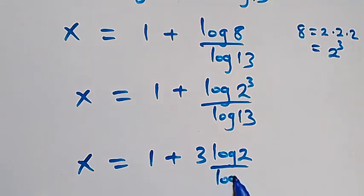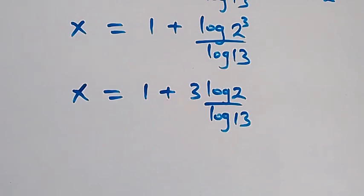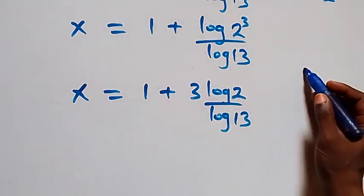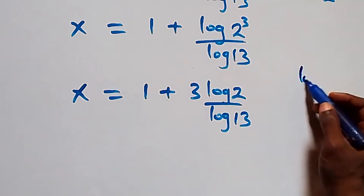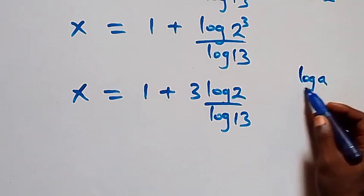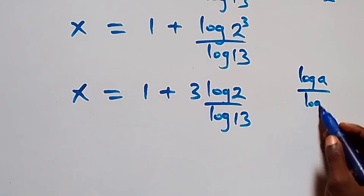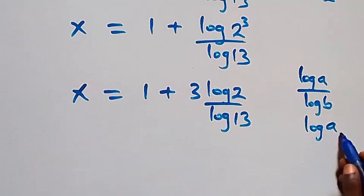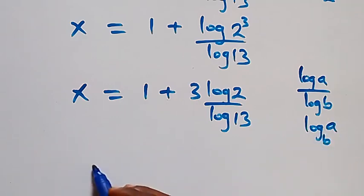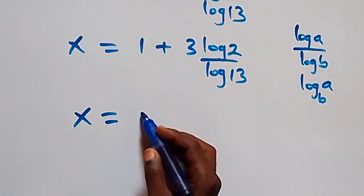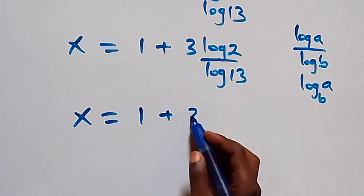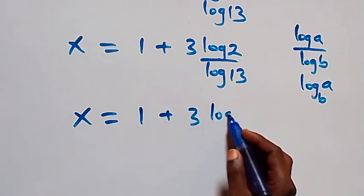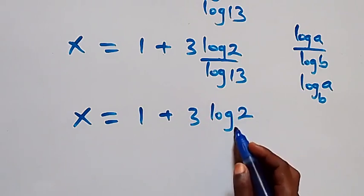From here, applying the change of base formula — log a over log b can be written as log a to base b — we can write this as x equals to 1 plus 3 log 2 to base 13.